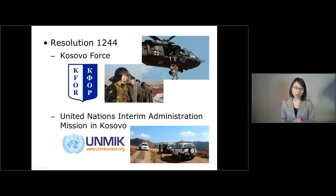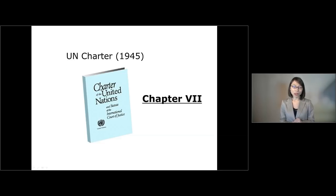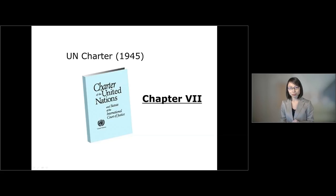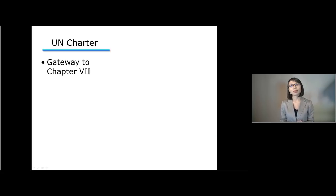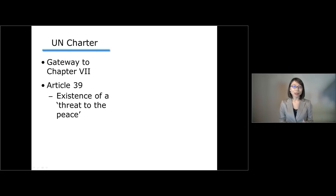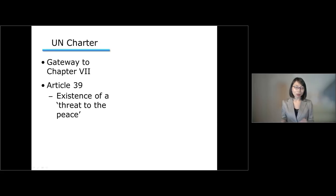The answer lies in Chapter 7 of the UN Charter. If you look at the Charter of the United Nations, there are 19 chapters and Chapter 7 is one of the most well-known chapters among them. Chapter 7 starts with Article 39, under which the Security Council first of all determines the existence of a threat to the peace — and that peace is understood to mean international peace as opposed to domestic peace.